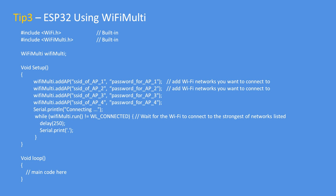Here's the same example for the ESP32 — it's almost identical. Note that the prefix for WiFiMulti has had the 'ESP8266' part removed, so it's almost identical code and just as easy to use.